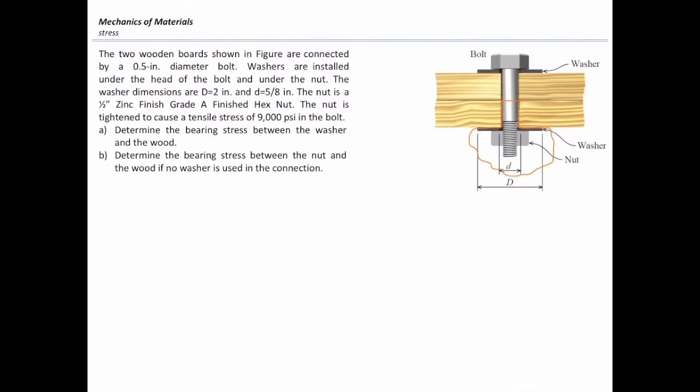Let me see what we have in this problem. The two wooden boards shown in figure are connected by a half-inch diameter bolt. Washers are installed under the head of bolt and under the nut. The washer dimensions are D equal to 2 inch, D stands for the external diameter, and the other small d is equal to 5 eighth inch, that is internal diameter of the washer.